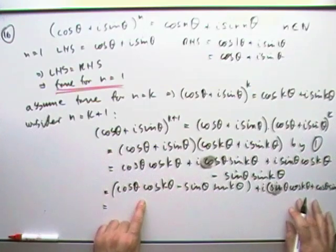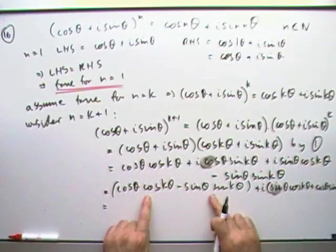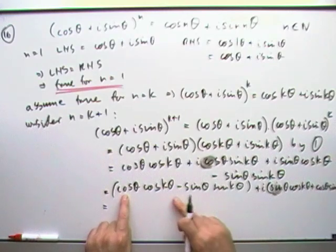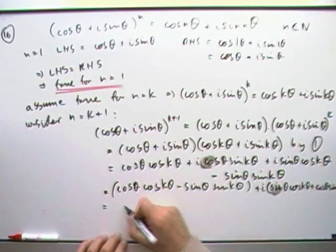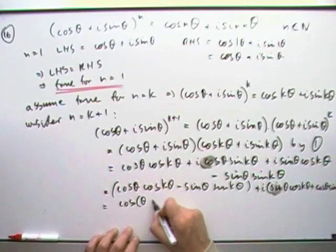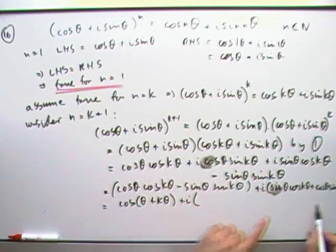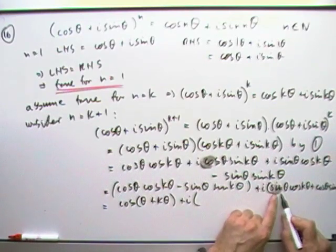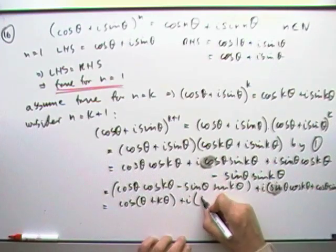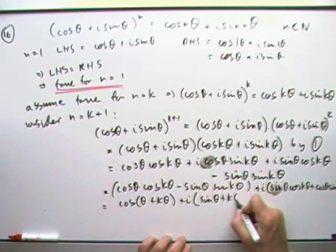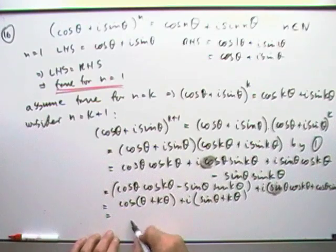And they're both expansions you're familiar with, that's the expansion of cos(a + b), so that goes to cos(θ + kθ) plus i times, and that's also the expansion, but this time of sine(a + b), so sine(θ + kθ), and then finally putting that together.